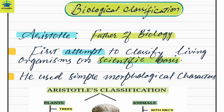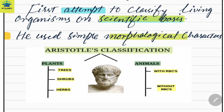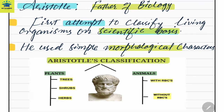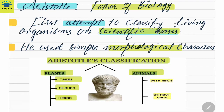Aristotle is also called the father of botany and father of zoology. He used simple morphological characters — that is, physical appearances — as the basis to classify living organisms. Aristotle divided living organisms into two groups: plants and animals. Plants were further divided into three groups: trees, shrubs, and herbs. Animals were divided into those with RBCs (with blood) and those without RBCs (without blood).